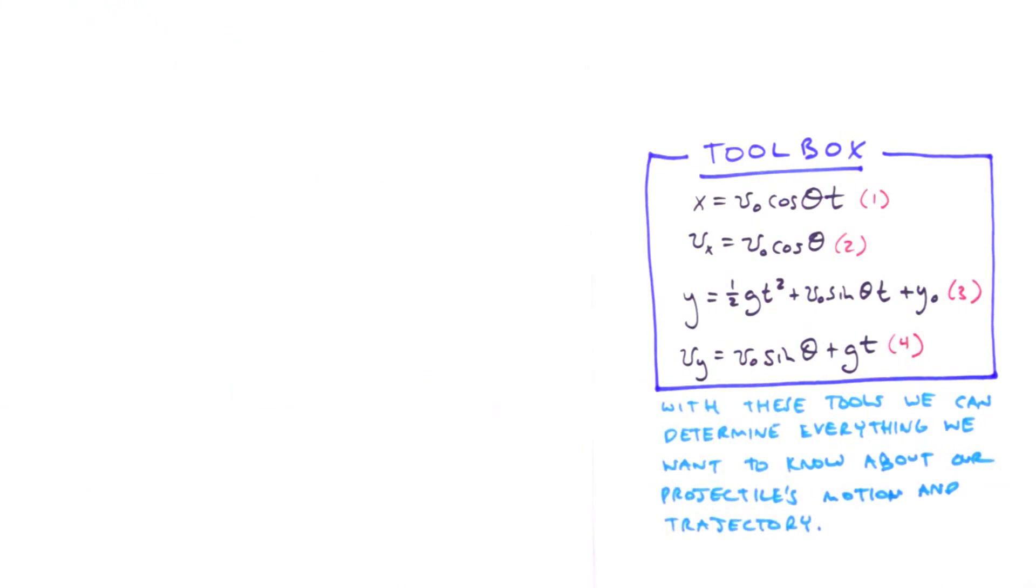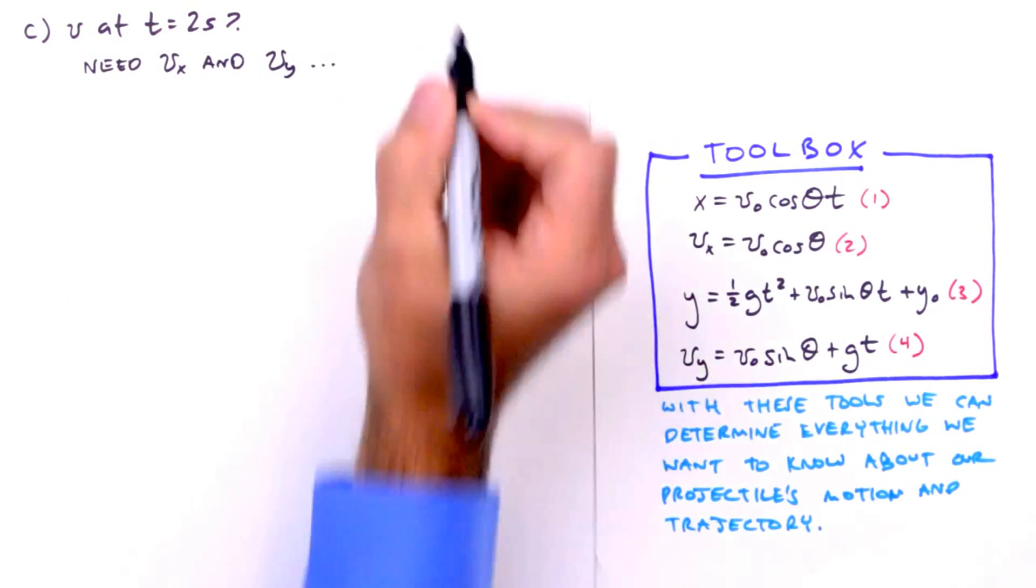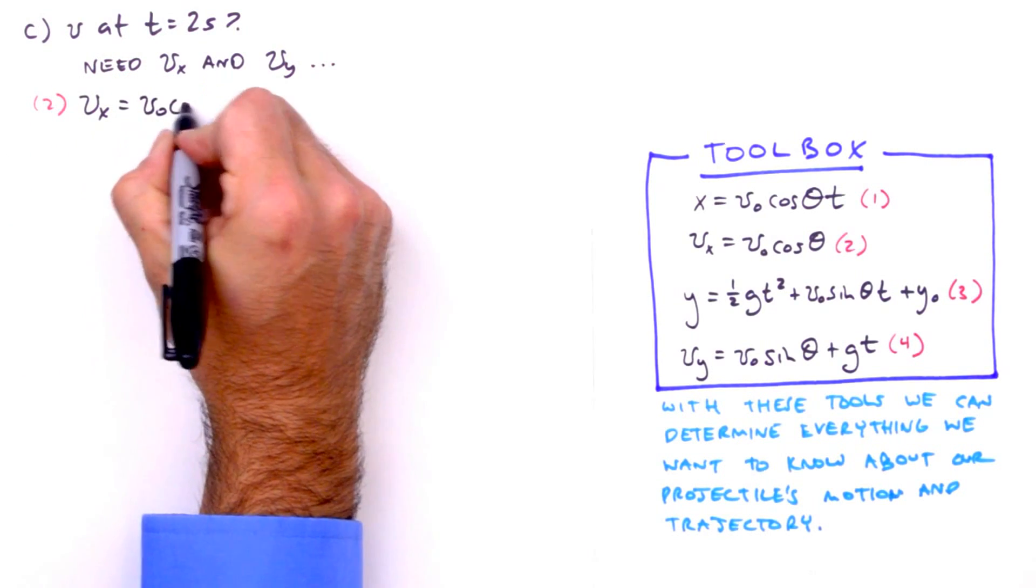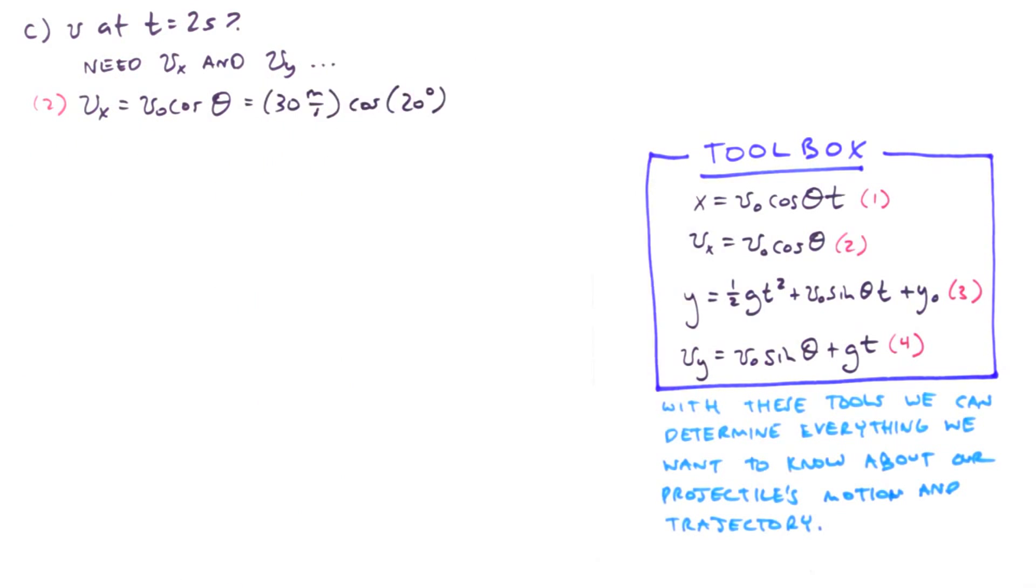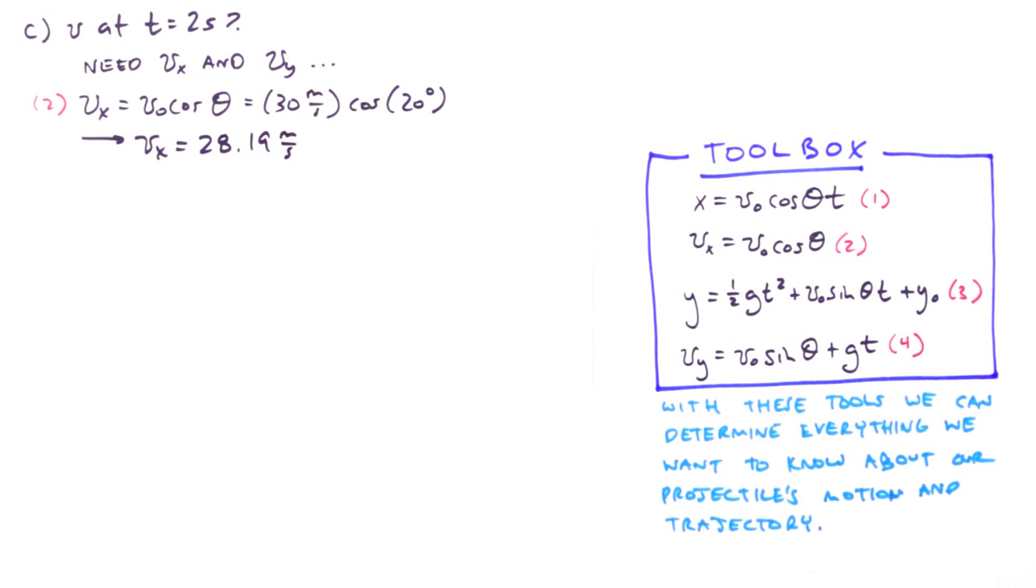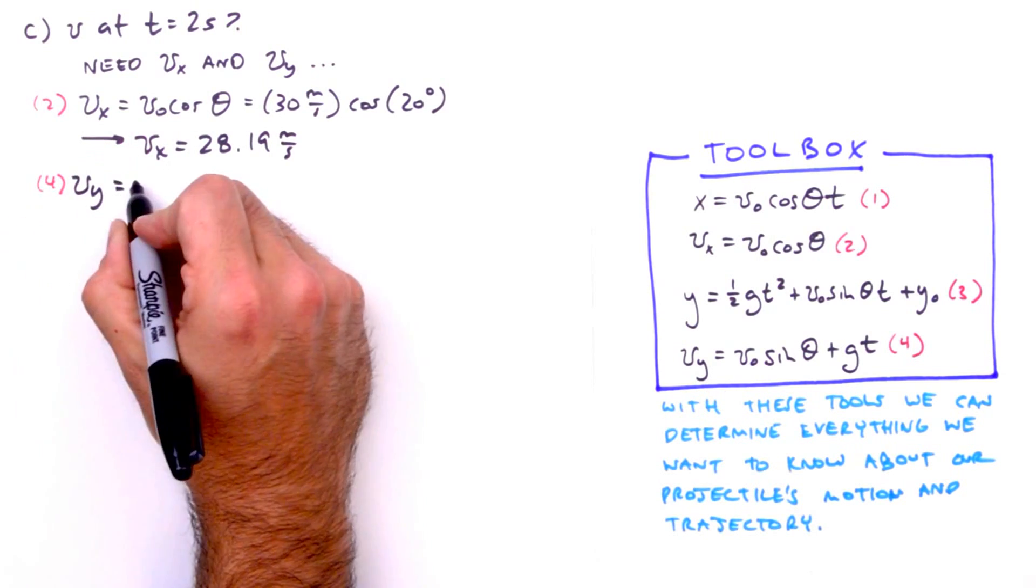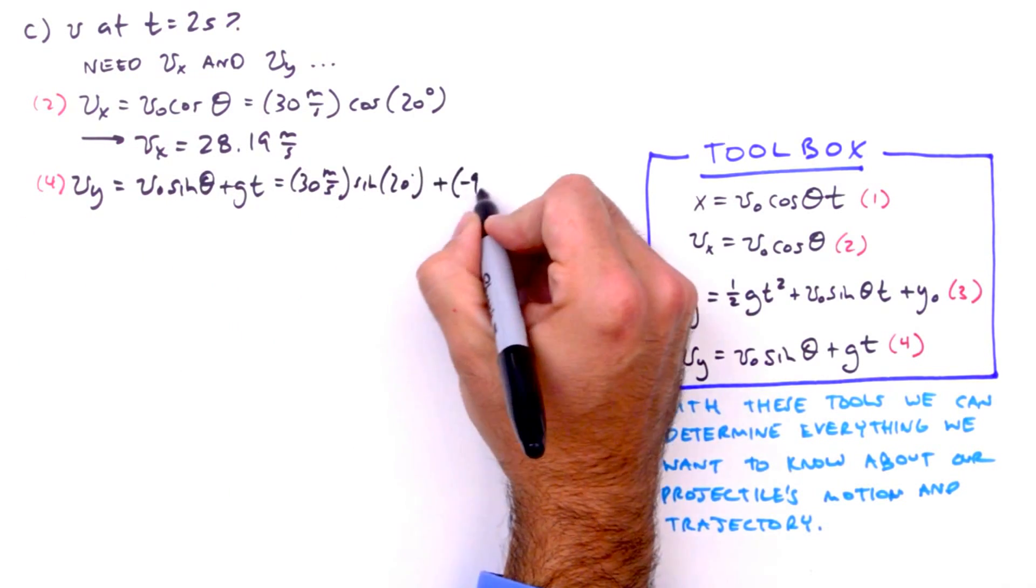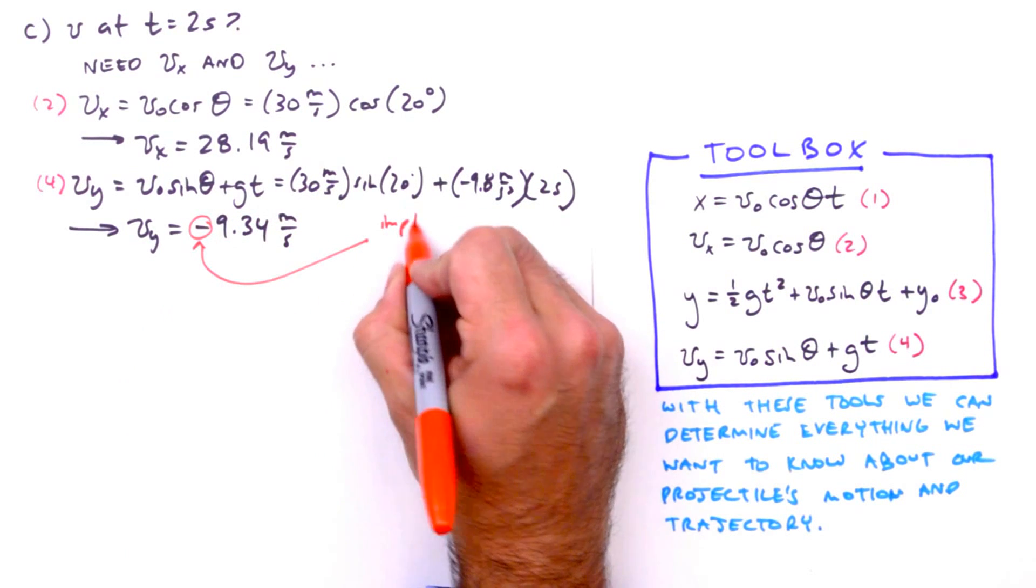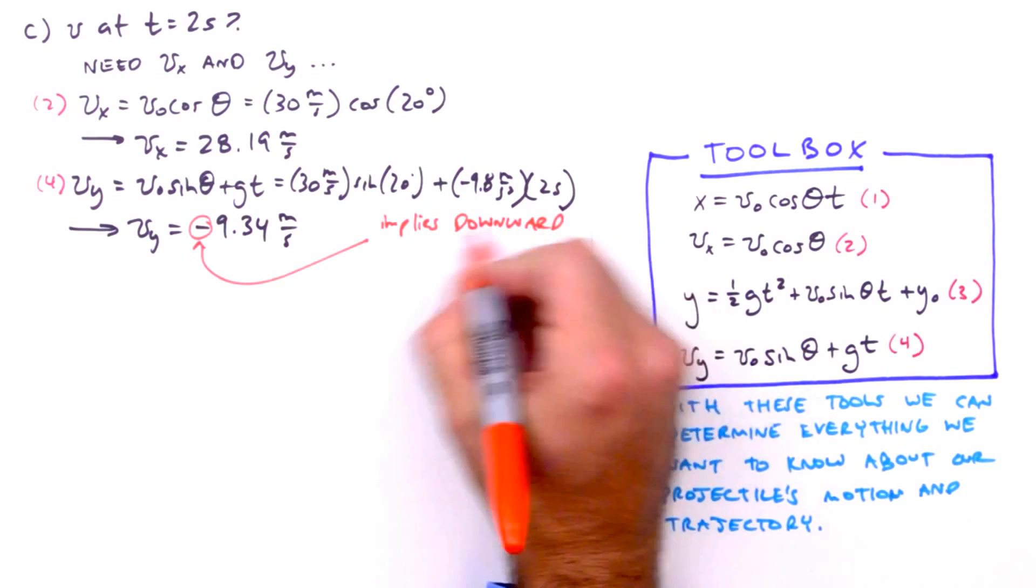Lastly, we'll determine the projectile's velocity two seconds after launch. We'll need to determine the x and y components separately, so starting with v sub x, we'll use equation 2. V sub x equals v sub o cosine theta. Using the aforementioned known values, we get 28.19 meters per second for the horizontal component. We'll use equation 4 to determine the vertical component. Inserting our known values, including the time in question, 2 seconds, we get a value of negative 9.34 meters per second for v sub y. What's up with that negative sign? That negative sign implies motion in the negative y direction, that is, downward.